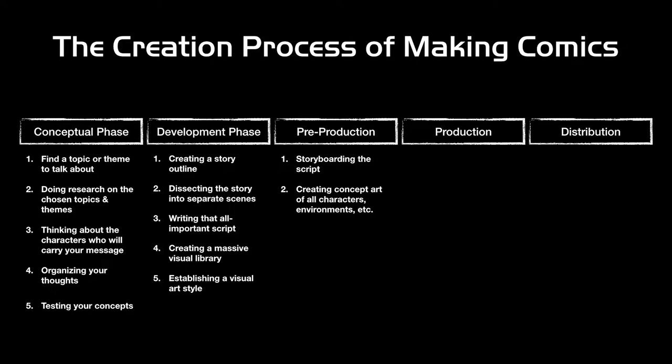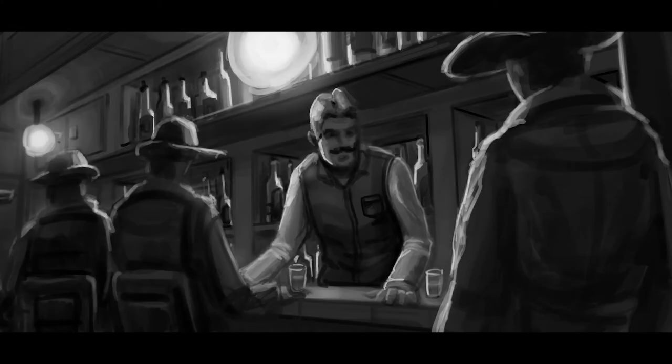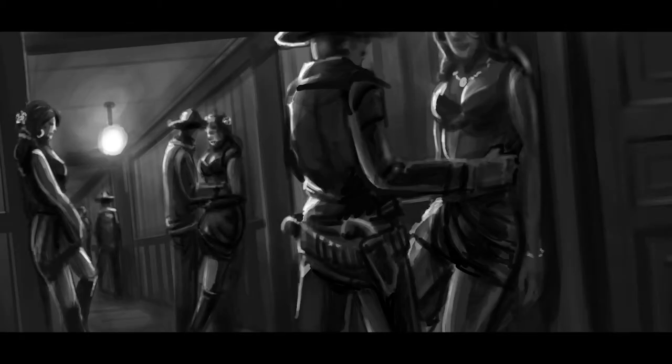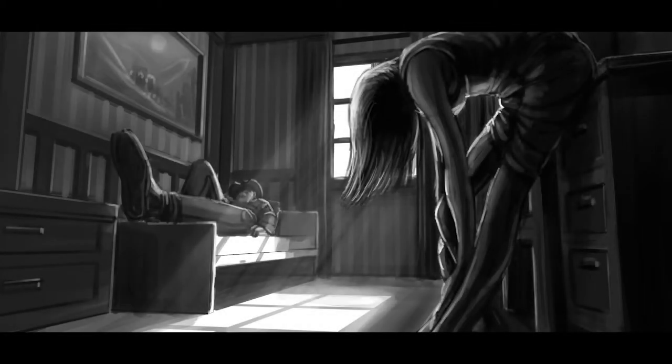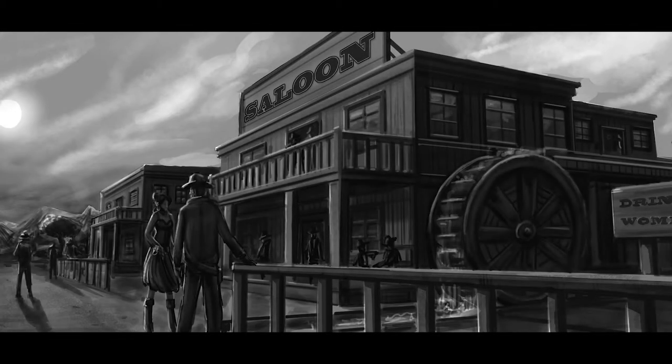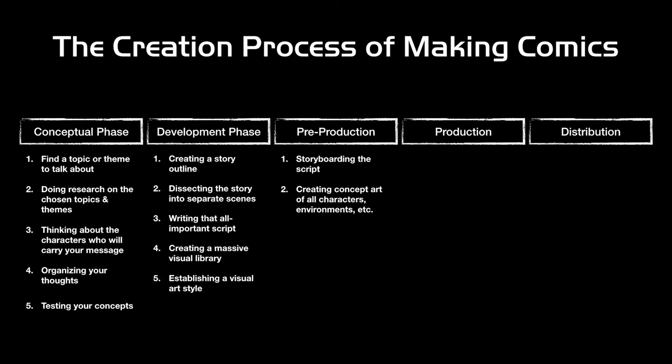Moving on, we have creating the concept art for all characters, environments, and so on. It's really more about the ones you need for the body of work you're going to do before taking a break — you separate it into pieces and choose which section you're working on, then do the concept art needed for that section. Then we finally move to pre-production, which might seem short but actually takes a while. It only has two sub-points but is quite a bit of work.